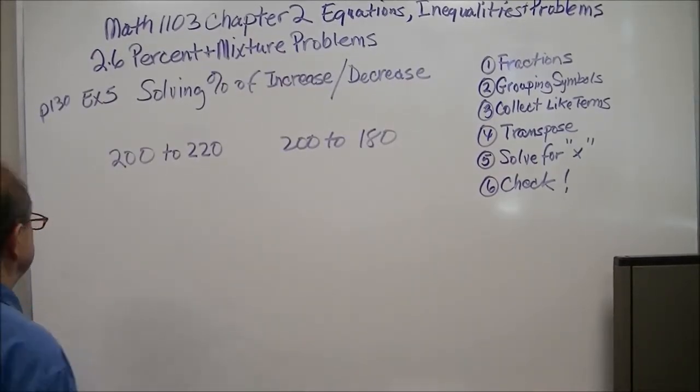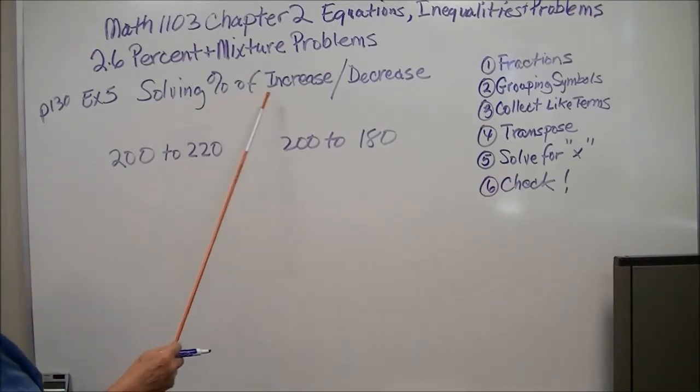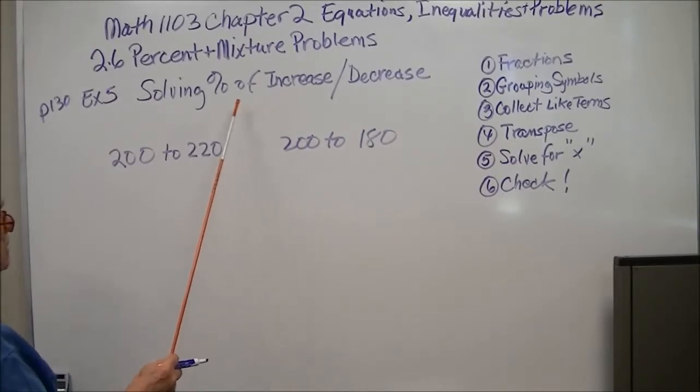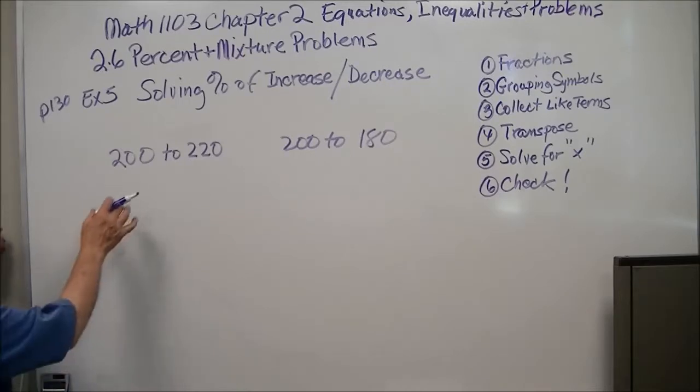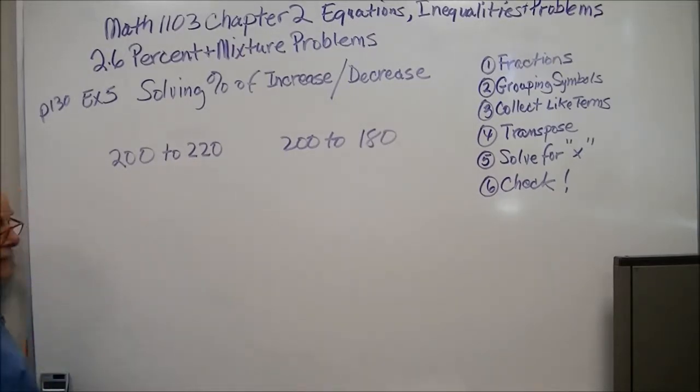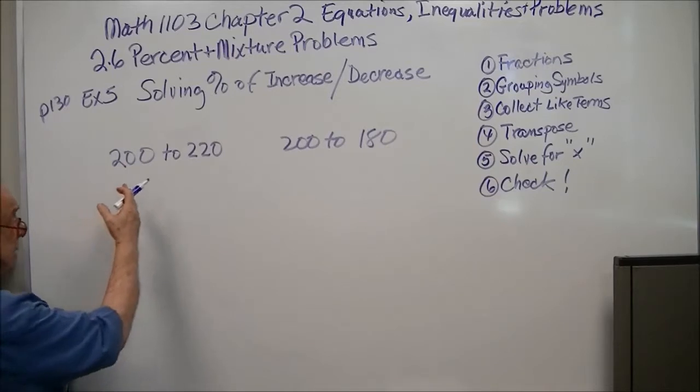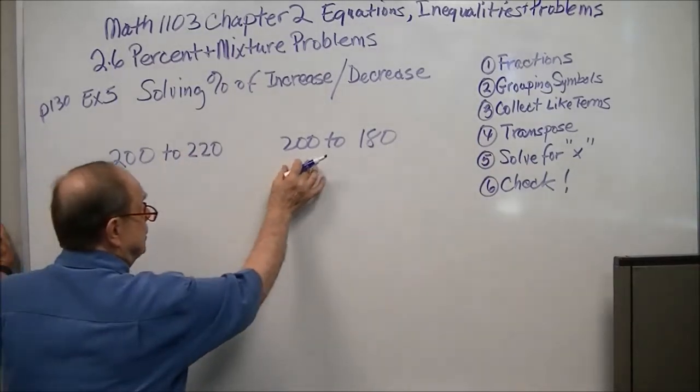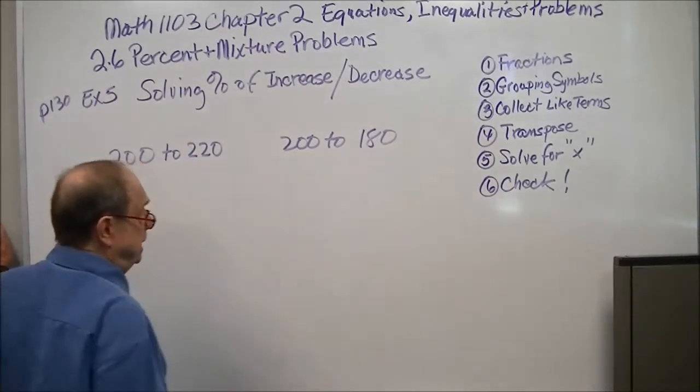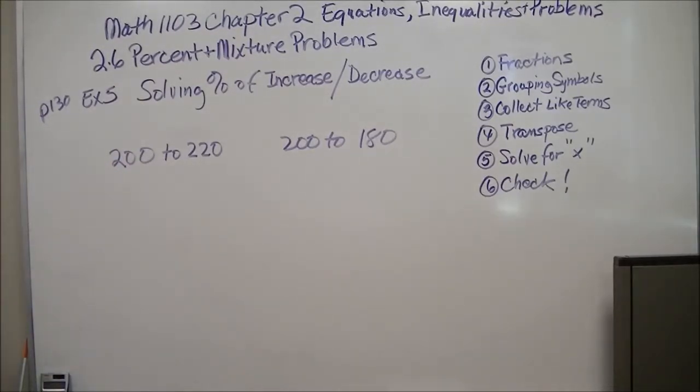In example five, they're going to ask us to look at solving percent of increase and percent of decrease problems. There's a general recipe for these. Here we have 200 going to 220. So this is an increase. 200 going to 180. That's a decrease.